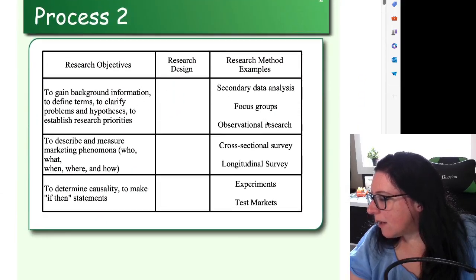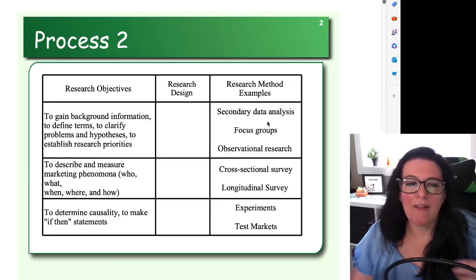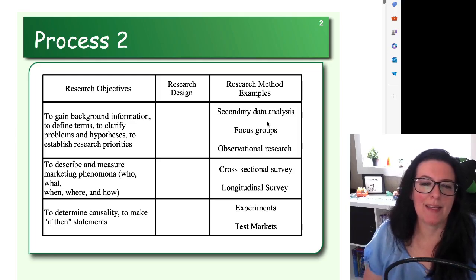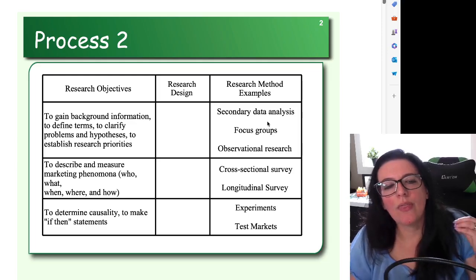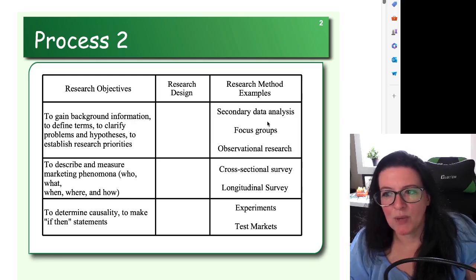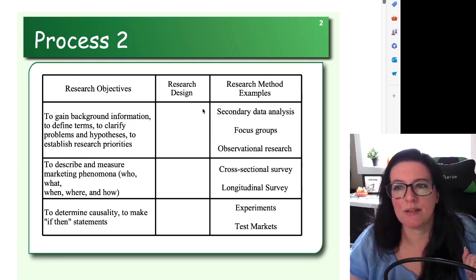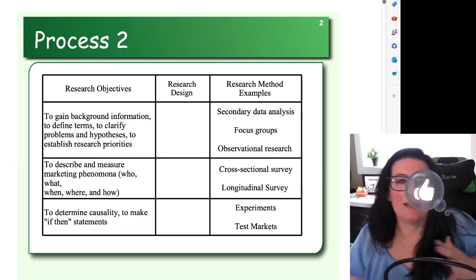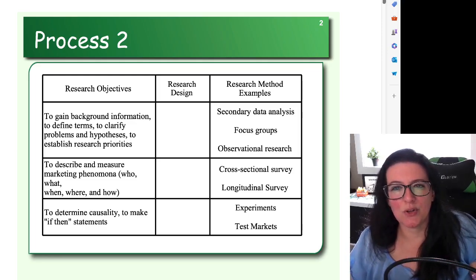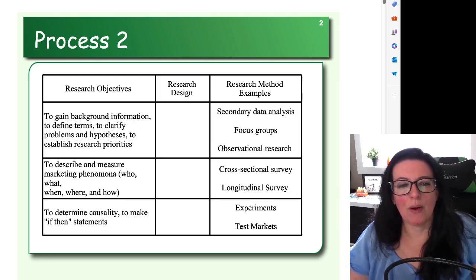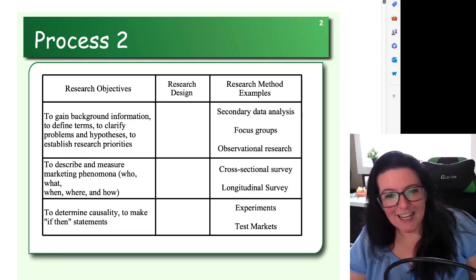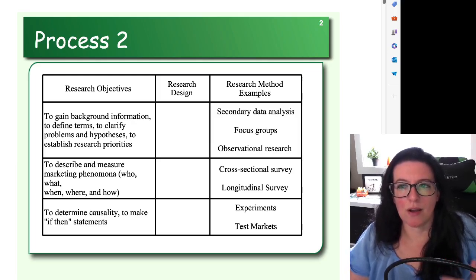Let's start by defining the research design. If we have a research problem — for example, will adding sales promotions increase our sales revenue and increase store traffic — that research problem lends itself to a specific type of research design. A research design is your plan that you're going to follow to answer those research objectives. Research objectives are how we will know if our research project is successful. With the sales promotions example, we would investigate the effectiveness of different sales promotions, which calls for a test market or experiment — the third type of research design.